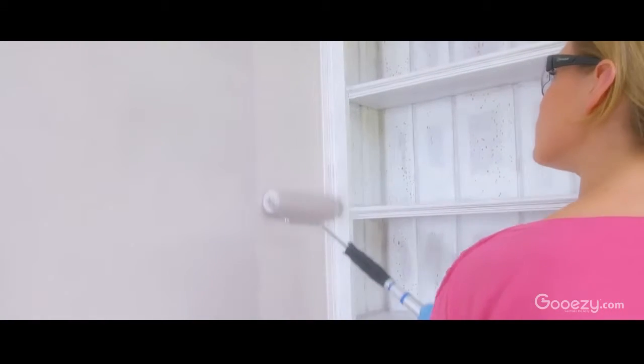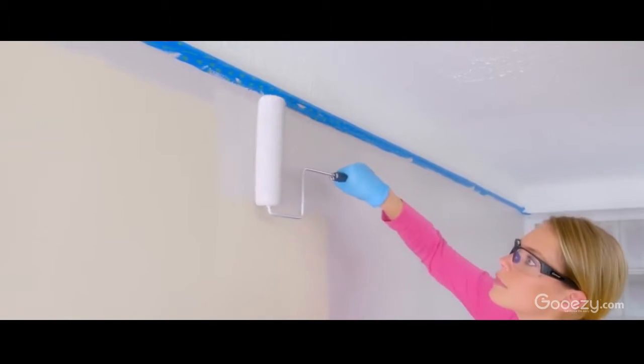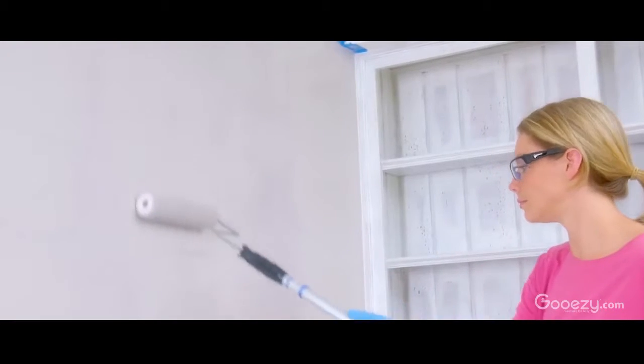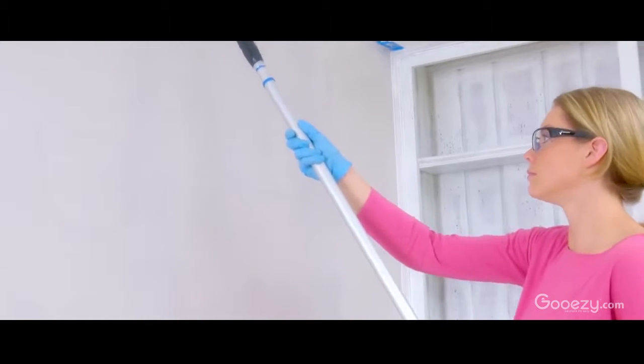Once you get going, you can go back along the edges. A few tips. Turn the roller sideways to get really close to the ceiling and baseboards. And to remove buildup and runs, lightly roll down over the painted areas. This is called laying off.